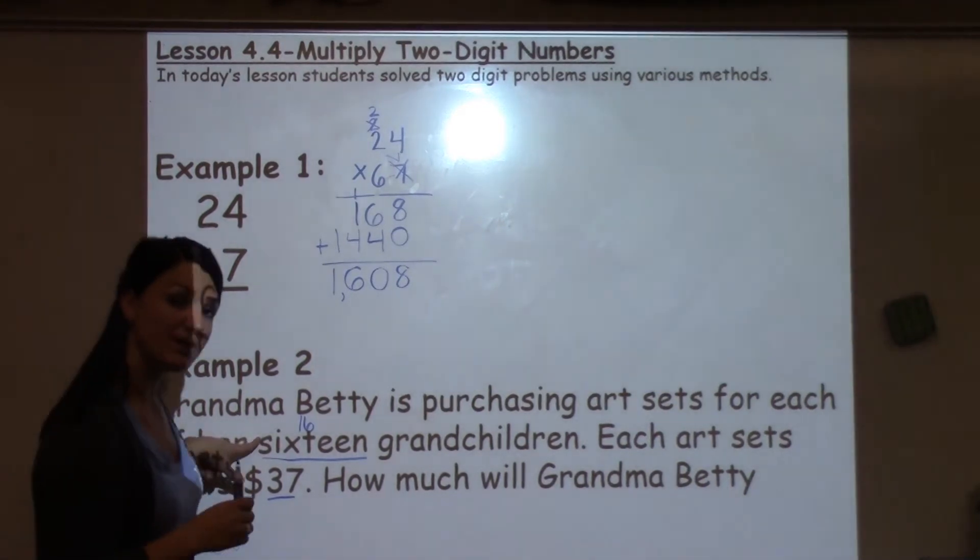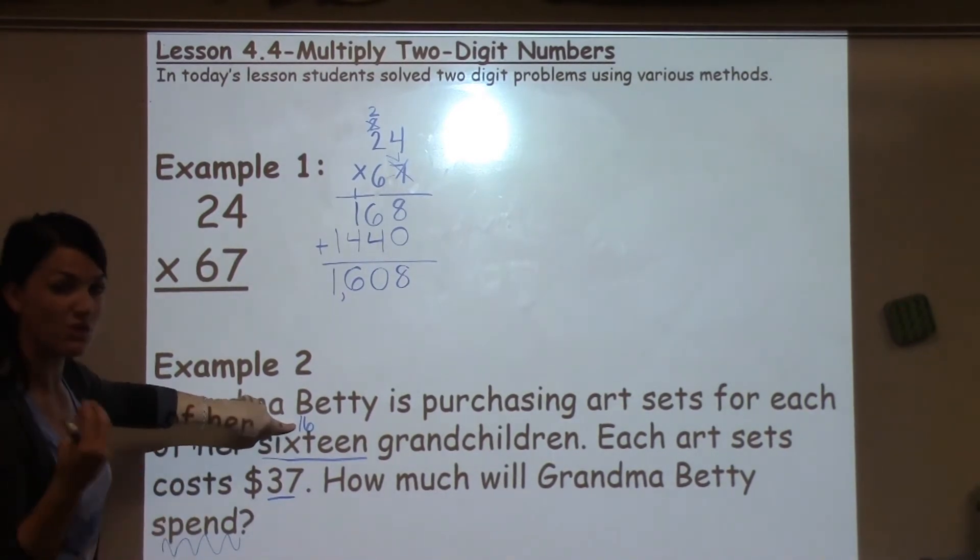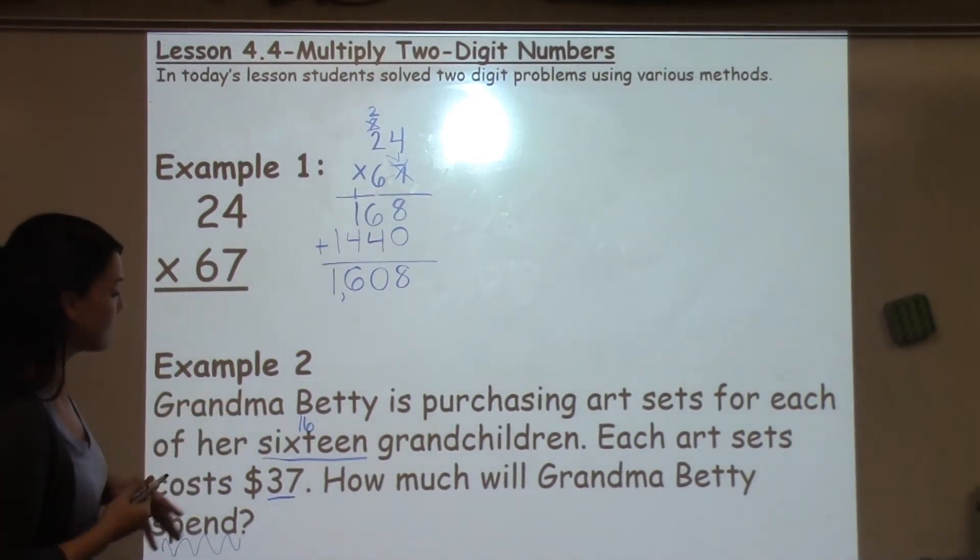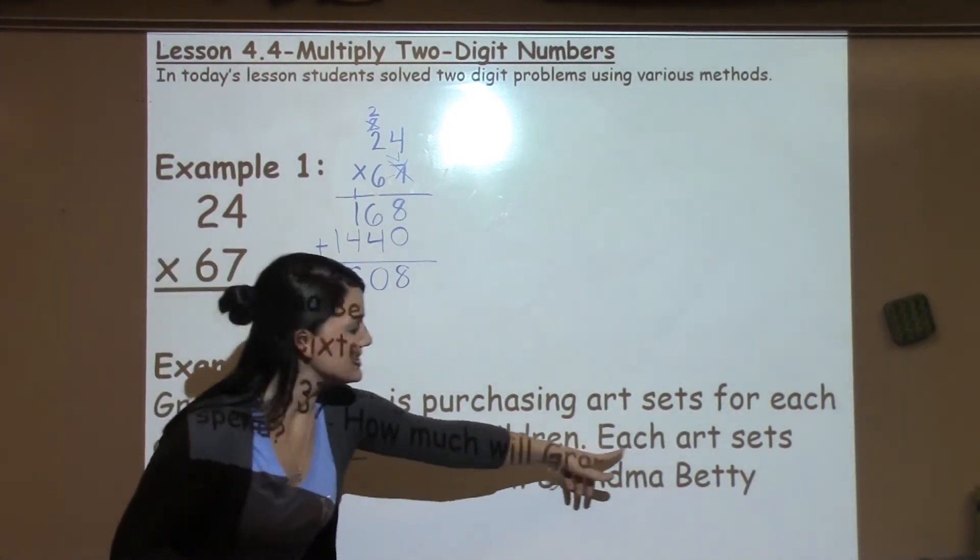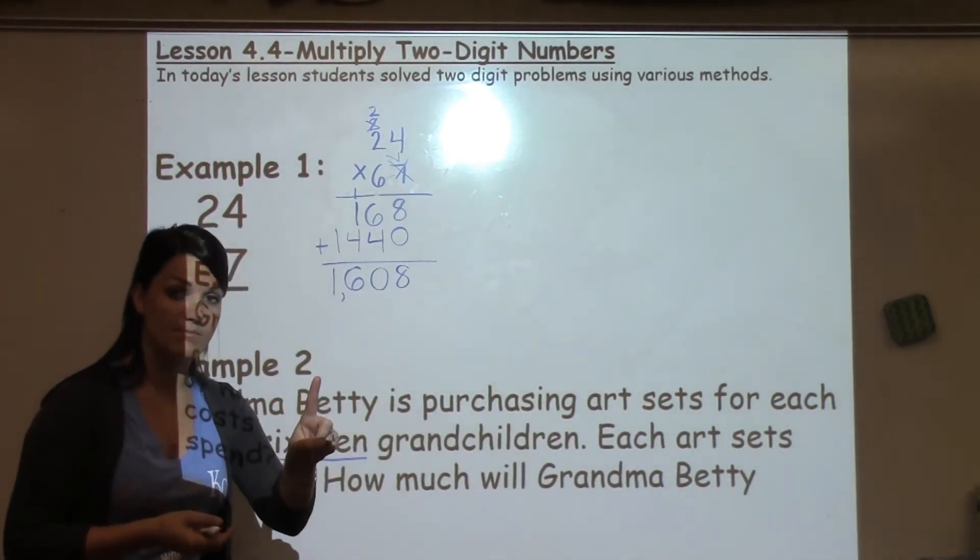I always encourage students that whenever they see a number in word form, to write that number up ahead so they remember what it is and they don't have to go back and think about it. So if each art set is $37, that's the same as one art set being $37.